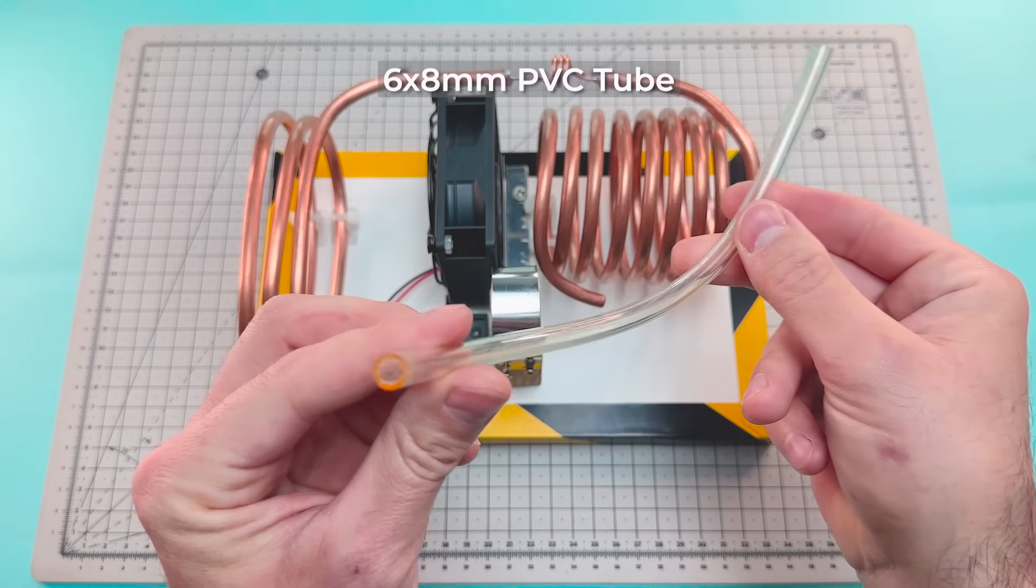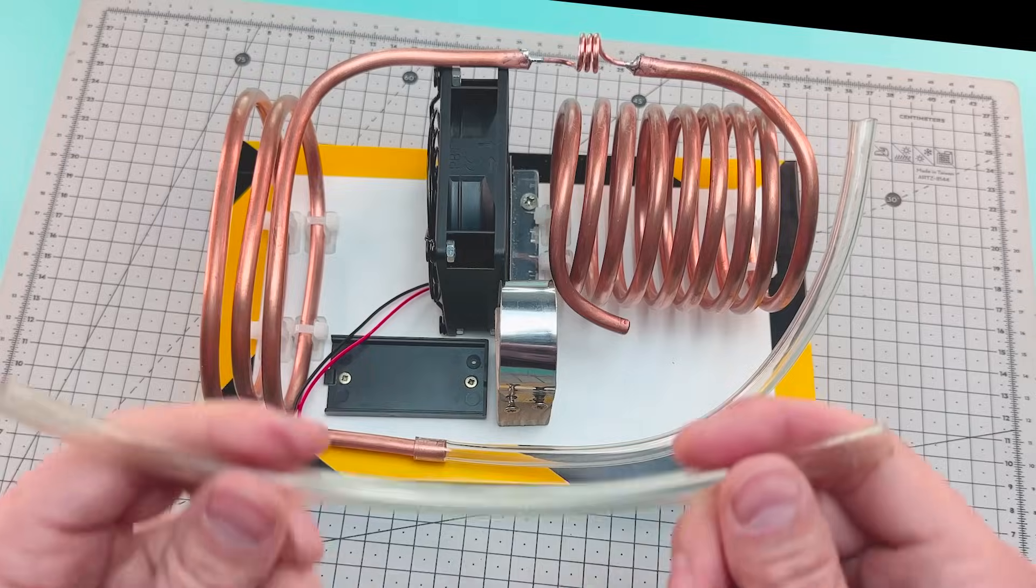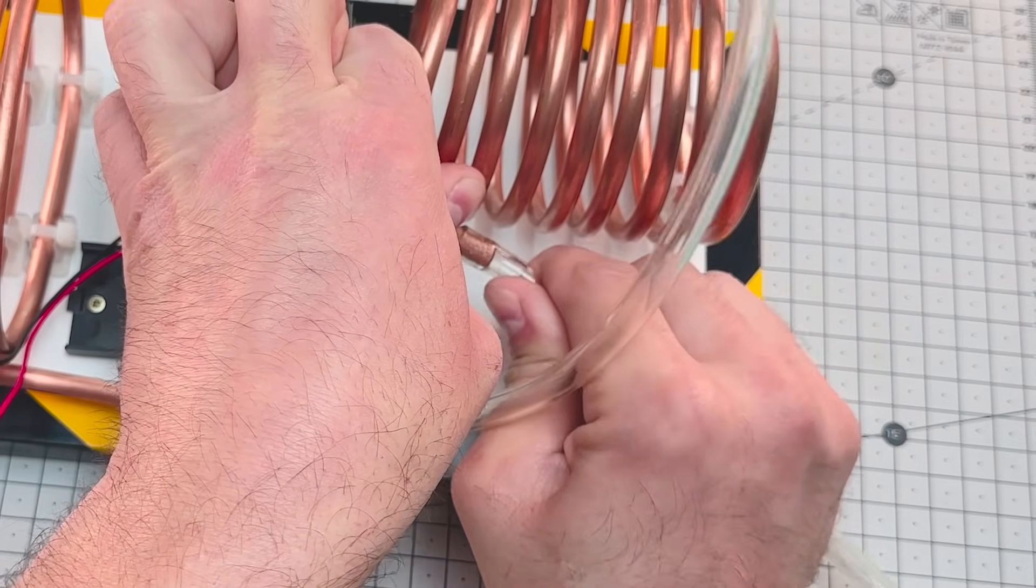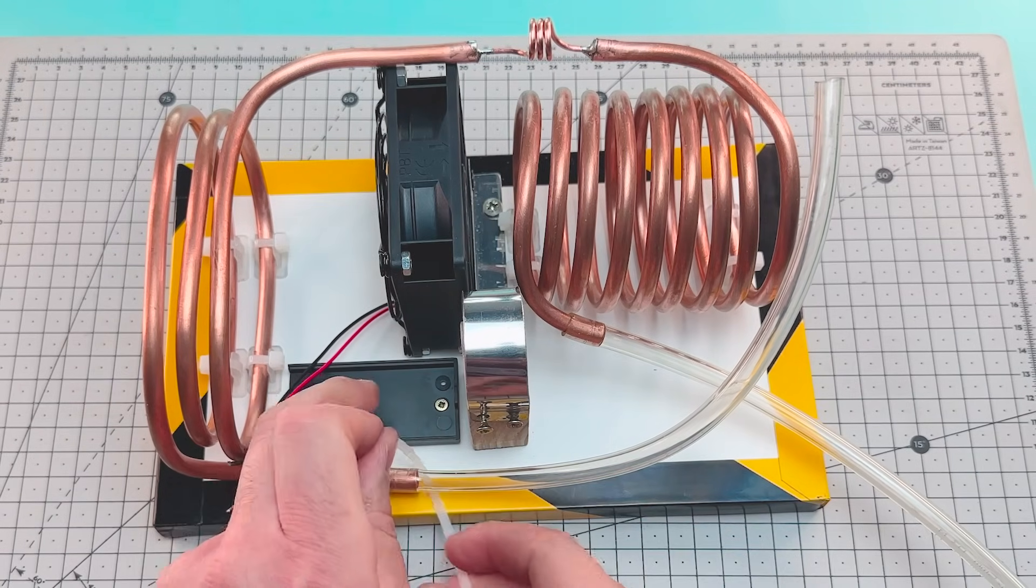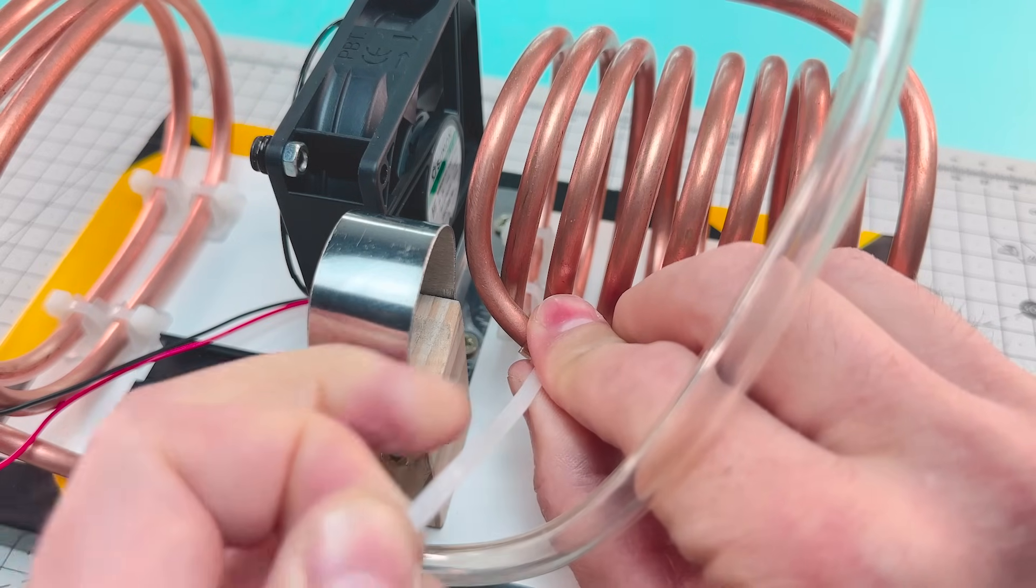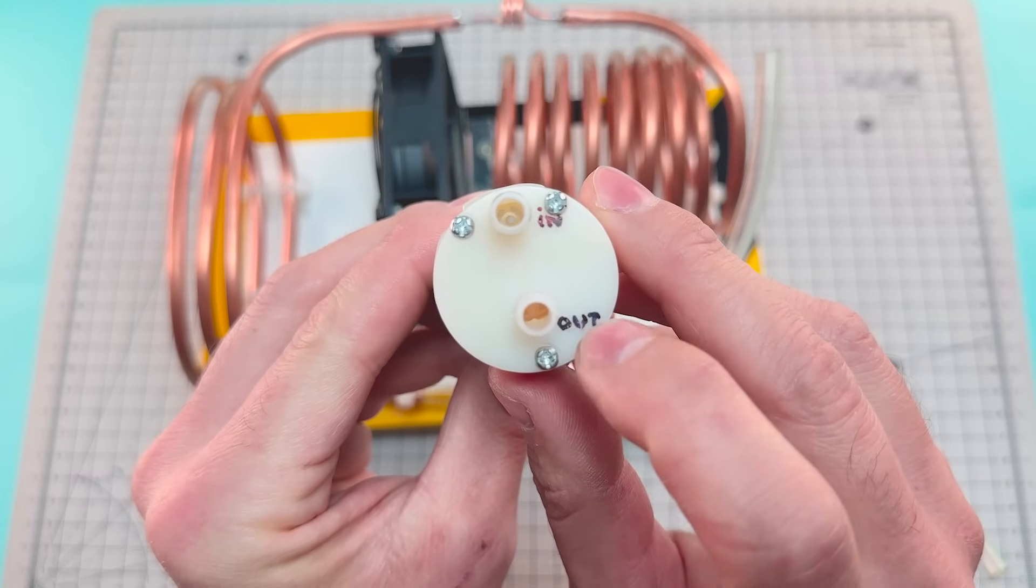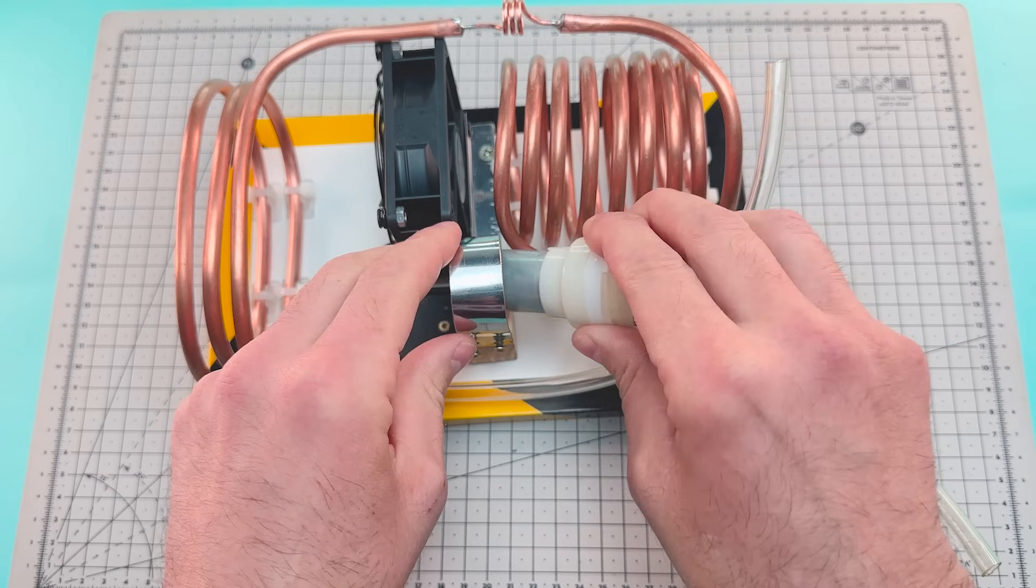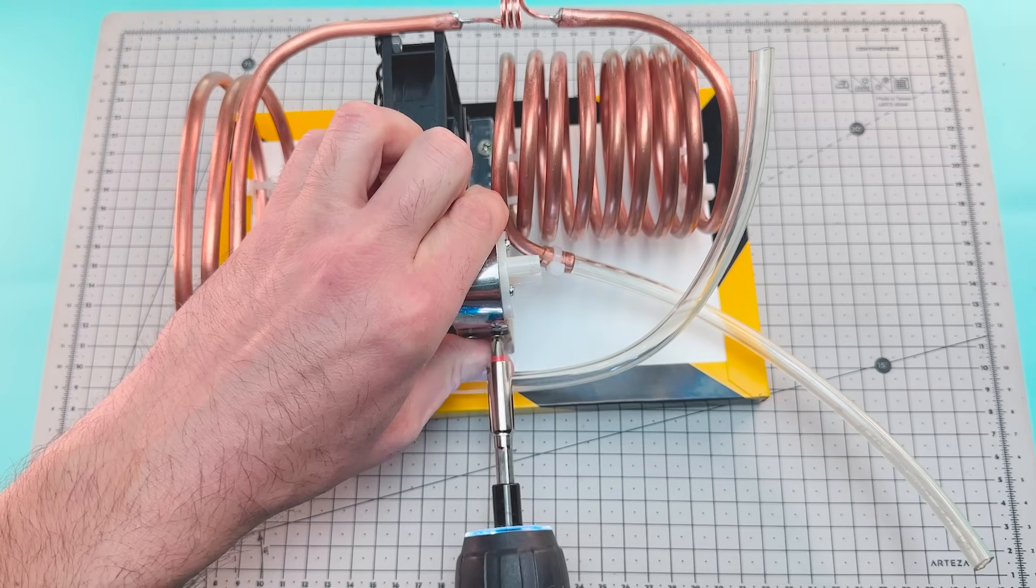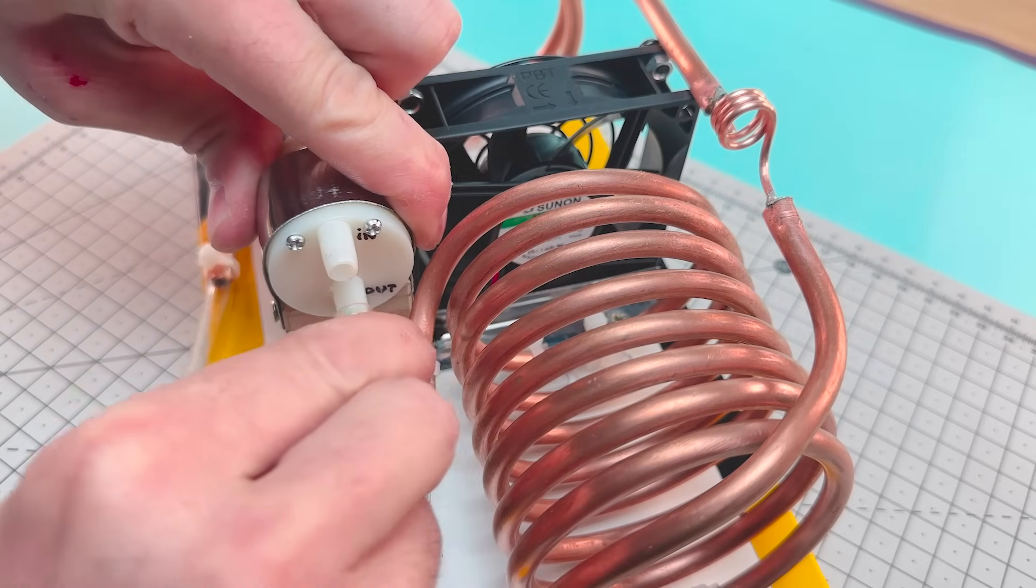We'll cut a PVC tube into two pieces and connect them to the outlets of the condenser and the evaporator. Then we'll place a 12-volt air pump on the previously installed support. Now we connect the pump outlet to the condenser and the inlet to the evaporator.